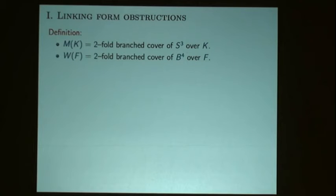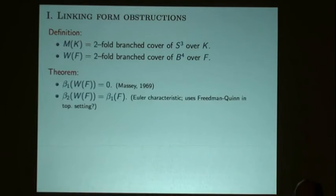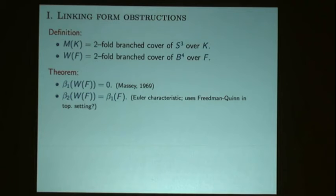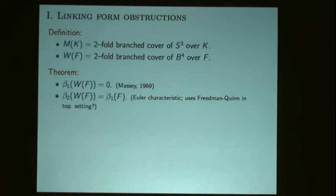Setup notation: knots will always be in the three-sphere. M will be the two-fold cover of the three-sphere branched over a knot. I'll use W to indicate four-manifolds that are branch covers of the four-ball for non-orientable surfaces. As background: if you have a non-orientable surface and take the two-fold branch cover of the four-ball over that surface, the first Betti number is zero, and the second Betti number equals the first Betti number of the surface.